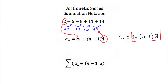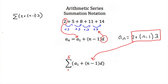Now we take this formula and plug it in after our summation sign. Below our summation sign goes 1, because we're starting with the first term. Above it goes 5, because there are 5 terms in this summation. So if we were to write this series in summation notation, we would say: the sum from n = 1 to 5 of 2 + (n − 1) × 3.